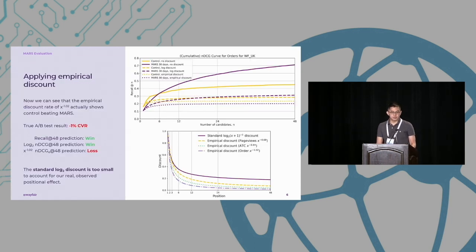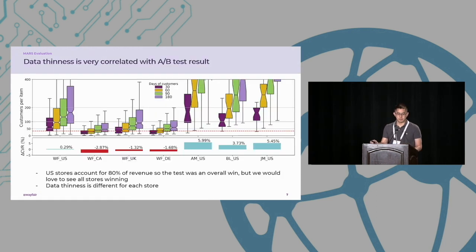So using this empirical discount, we can see that control actually wins over our model now, and this is the correct prediction of our A-B test result. So this highlights the danger of using NDCG blindly without customizing the discount for your actual observed real positional effect. Below we also show the different discount rates. You can see that even the most gentle discount for page views is still much steeper than the standard logarithmic discount, which is simply too small for our real observed positional effect.